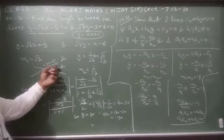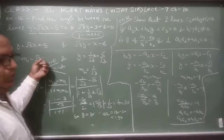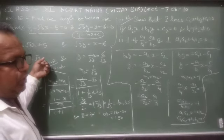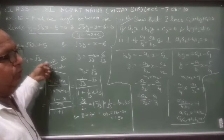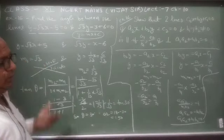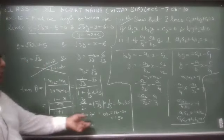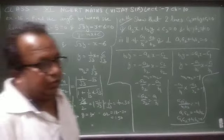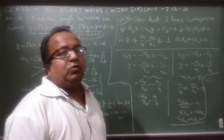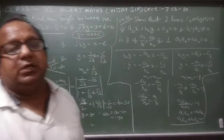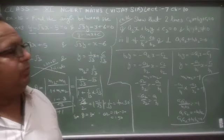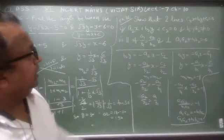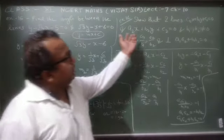अगर एक angle θ है तो दूसरा obtuse होगा — 180° - θ। इस प्रकार दोनों angles निकाल लेते हैं। अब students example 16 पर आते हैं।